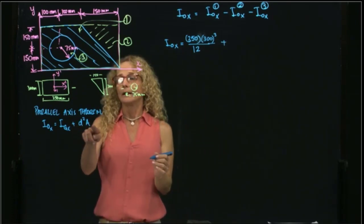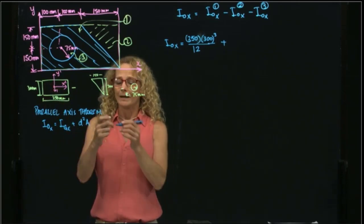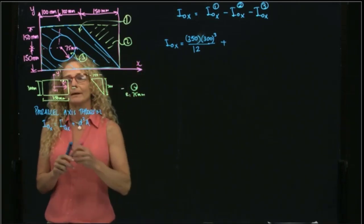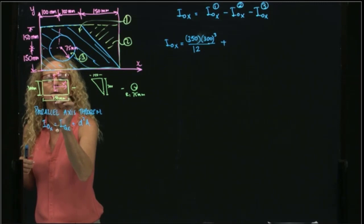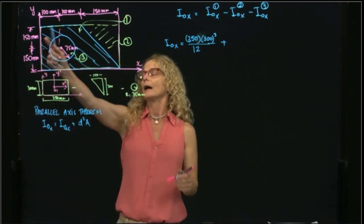And I will add the area times the distance. The distance between that center of gravity and my axis x, my axis x is over here, will be 150.